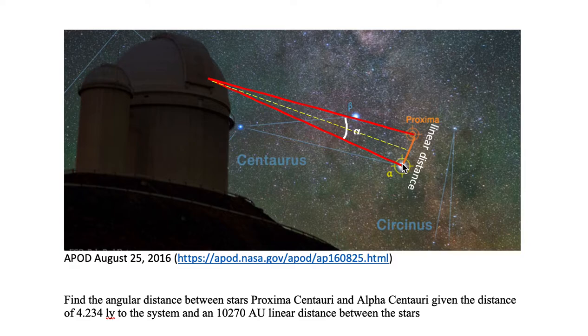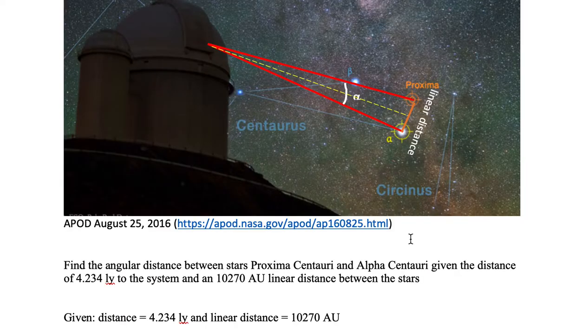Now we need to break this problem down into given, find, and solution, and the equation we need to use. So let's start with the given. We are given 4.234 light-years, which is the distance to the star system.